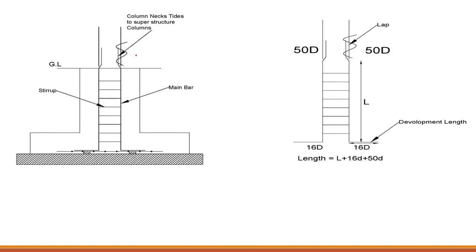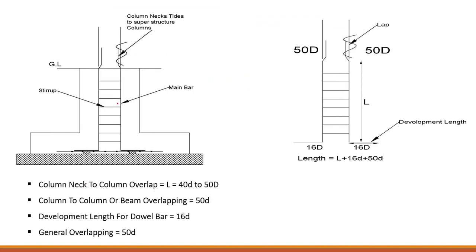Now let's look at different overlap values for different structures. Remember: if these values are available on the drawing, use those, because they will be specific to the design. If not, you can use standard values. The most important thing is to read the drawing thoroughly, collect all the details from it, and only use standard values if something is missing.